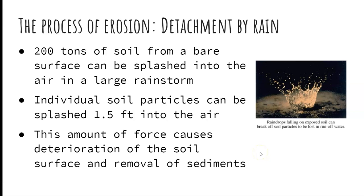On a bare soil, 200 tons of soil can be splashed in the air during a rainstorm. Those individual soil particles can be splashed a foot and a half into the air — that's the energy coming down from raindrops. That's the detachment I was talking about: how detachment happens is the raindrops coming down, splashing on the soil surface, and moving those particles away.